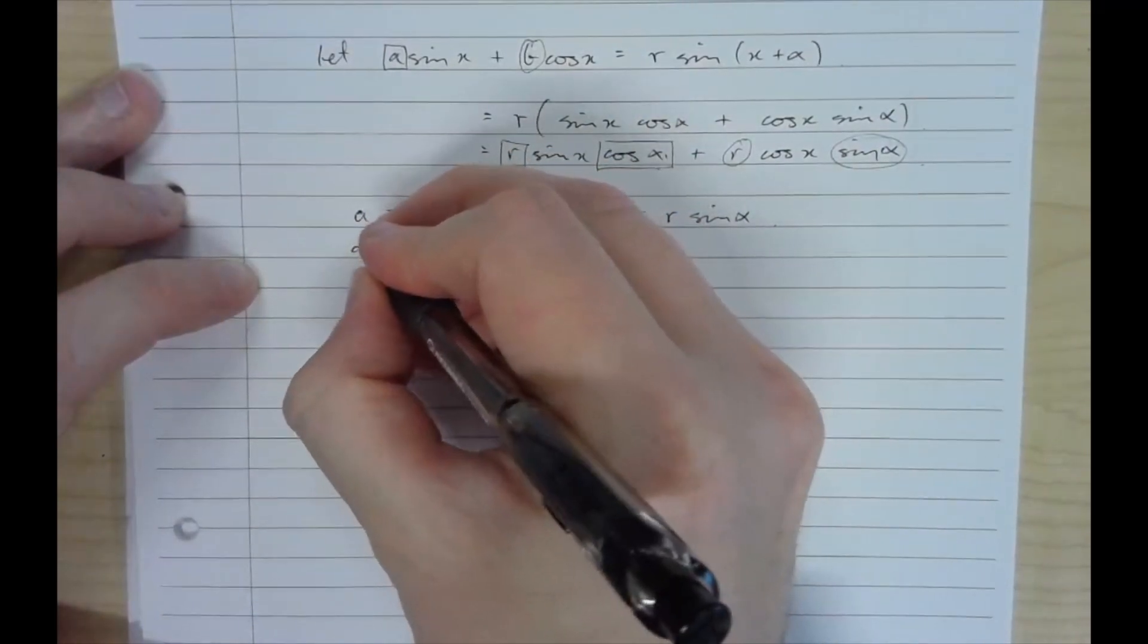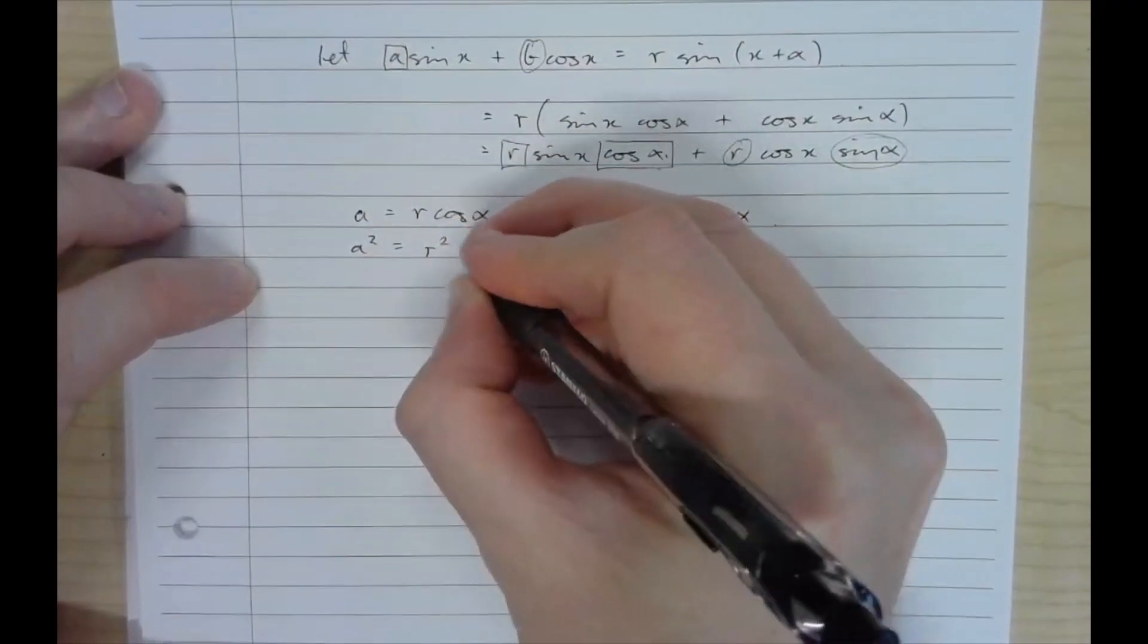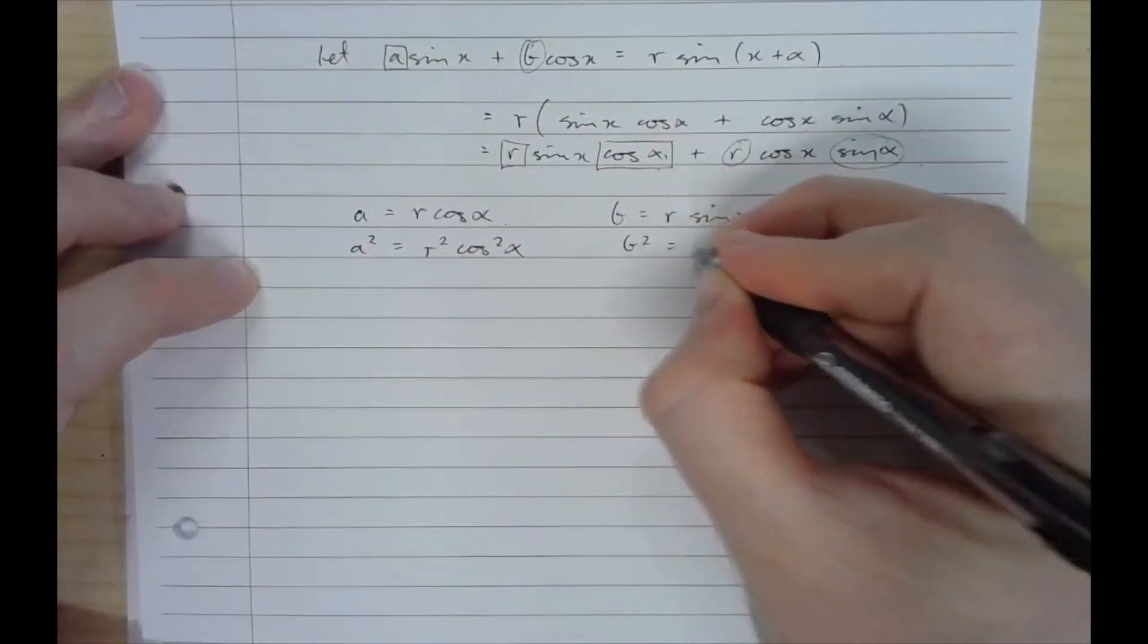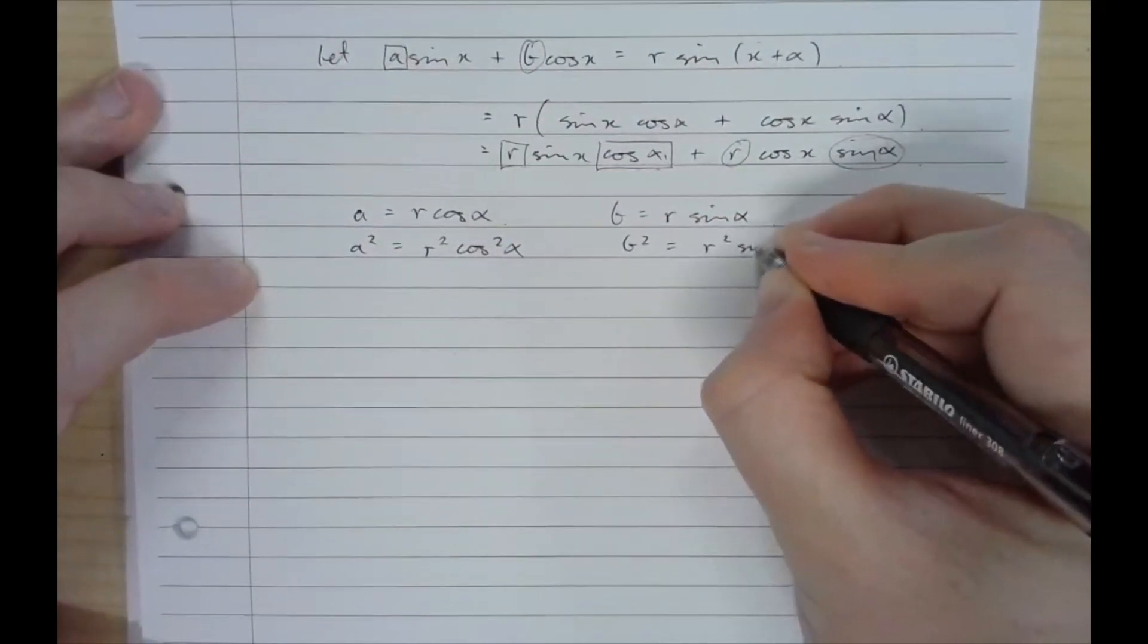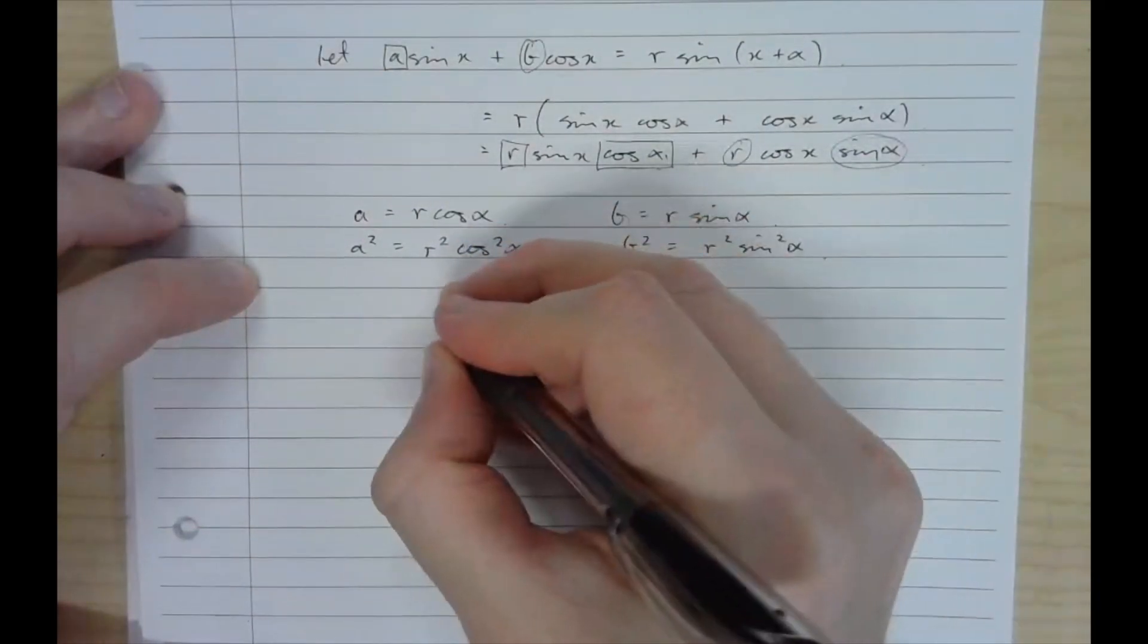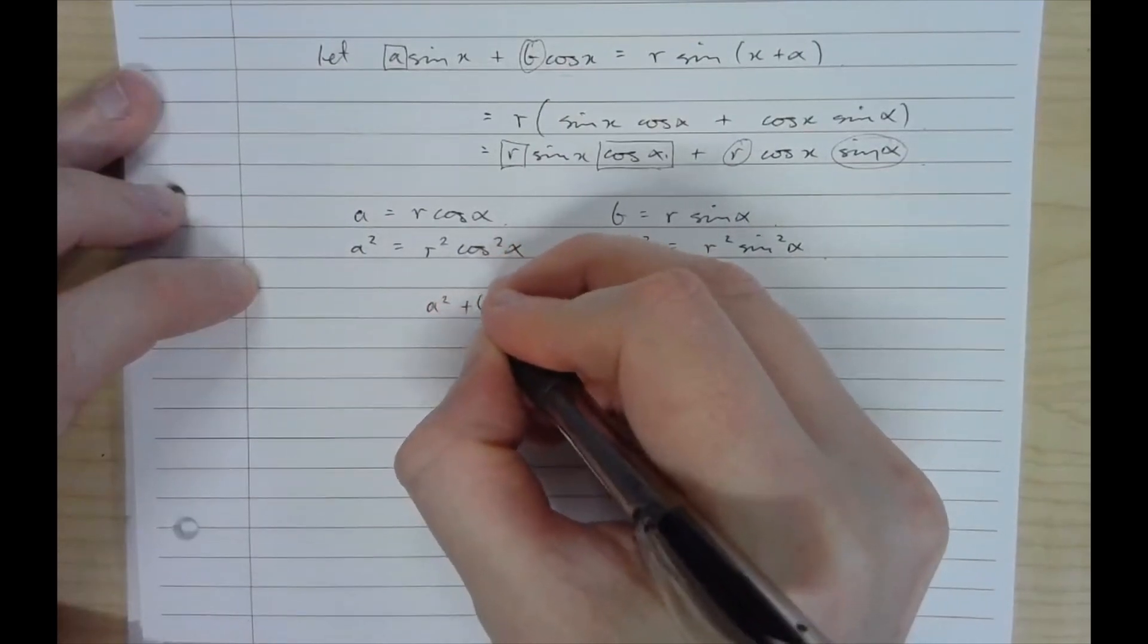Now if I square both sides, which you'll see why that's useful in a second. Square both sides of both equations. And then if I add them together, on the left hand side I have A squared plus B squared.